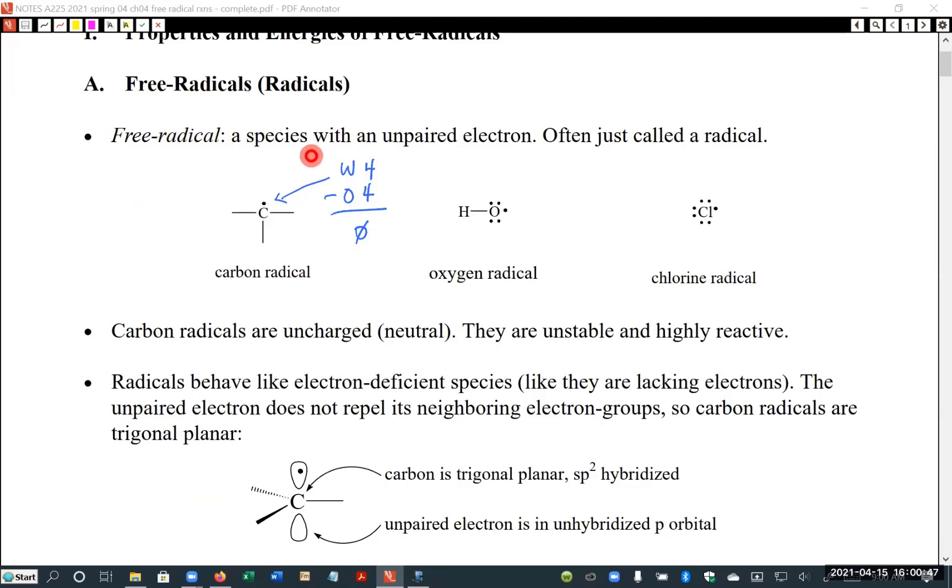A free radical is defined as a species with an unpaired electron. So this is an example of a carbon radical where these lines are supposed to indicate covalent bonds with two electrons in them. And then instead of having a lone pair up here, what we have is just a single electron. That is the free radical or the radical.